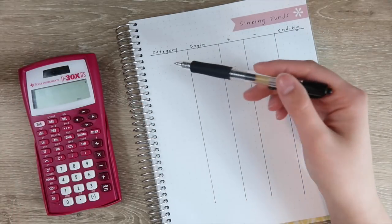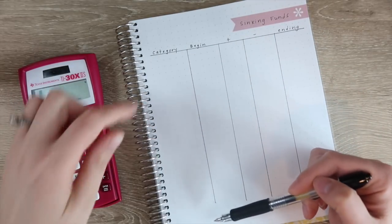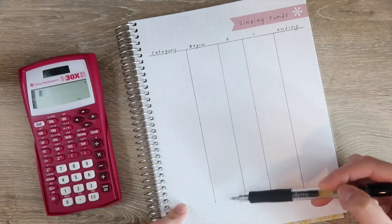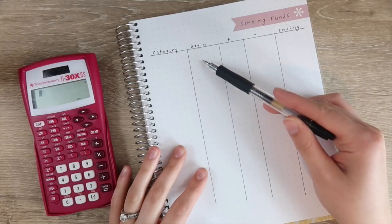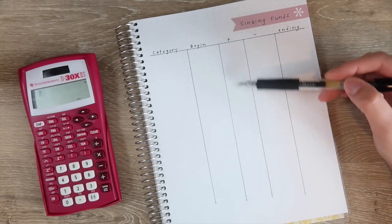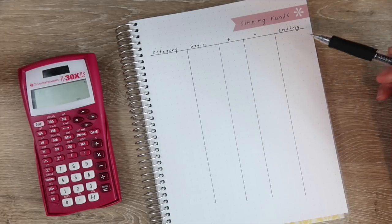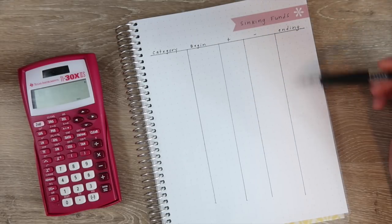I always like to have a column for category, which is what you're saving for, the beginning balance of the sinking funds. So if you're just starting out this would be zero for this month. What you're adding to the sinking fund, what you're subtracting or what you're spending from the sinking fund, and then what amount you're ending with.